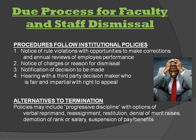Faculty and staff dismissal procedures must follow institutional policies, and these policies should include: one, a notice of rule violations with opportunities to make corrections and annual reviews of employee performance; two, a notice of charges or reasons for dismissal; three, notification of decisions to be made; and four, a hearing with a third-party decision maker who is fair and impartial, with a right to appeal.